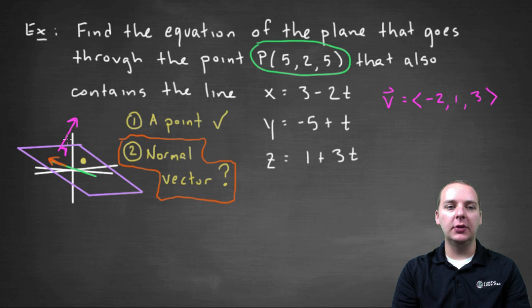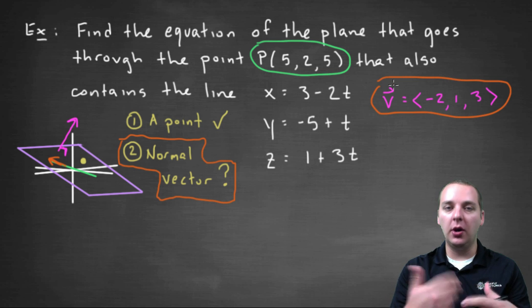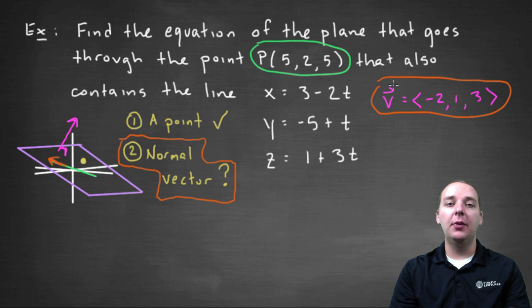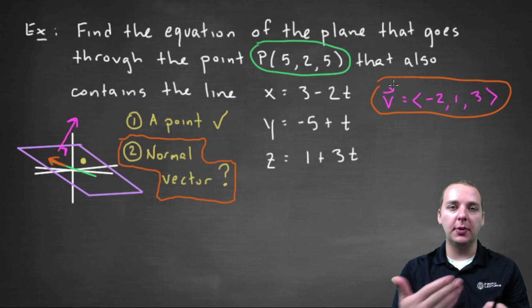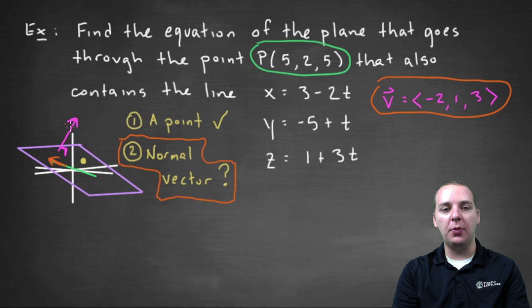Basically what we're going to do is get this vector similar to how we got it in the last video. We're going to find two vectors that are in the plane. We already have one by the way, this vector here is in the plane. But we need one other vector that's in the plane, and then we're going to take their cross product. Because as you know, when you take the cross product of two vectors, it gives you a third vector that's orthogonal to both of the other two vectors. That would be the guy that we're after here.